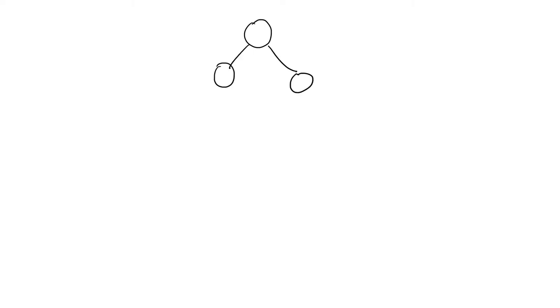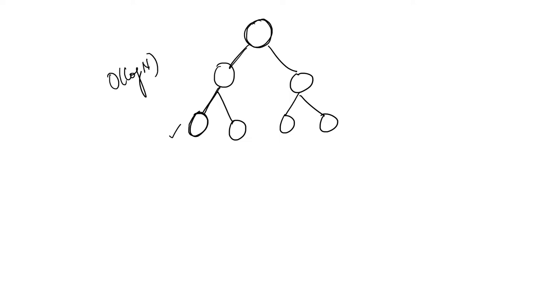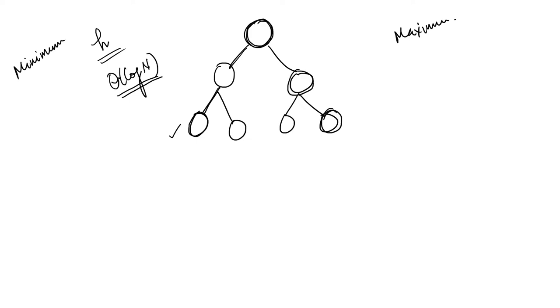Next let us discuss finding the minimum in a balanced binary search tree. To find the minimum I have to go to the extreme left, and reaching the extreme left requires O(log n) time because I move from the root to the leftmost leaf node, which equals the height of the tree. Since the height is log n, finding the minimum requires O(log n) effort. Similarly, finding the maximum requires going from the root node to the extreme right node, which also requires O(log n) time.